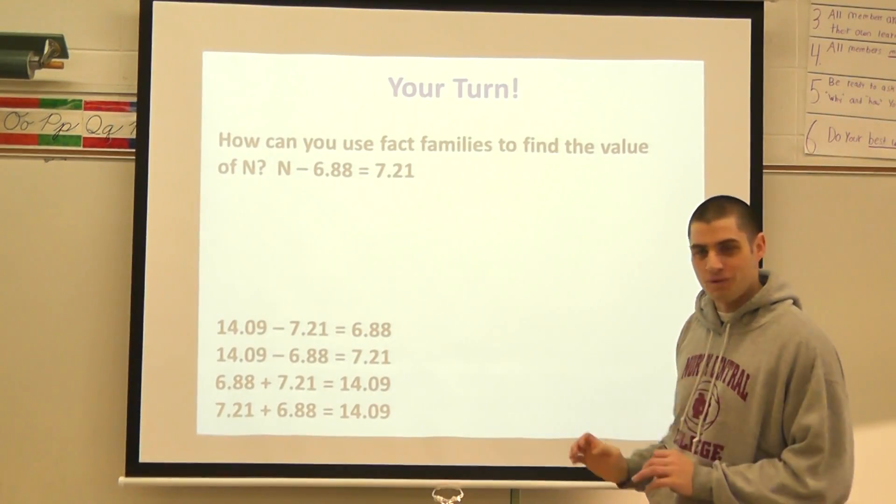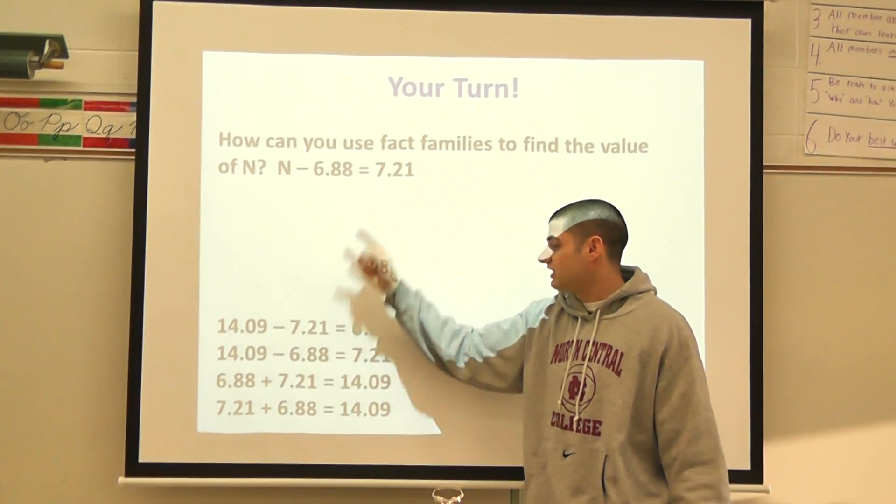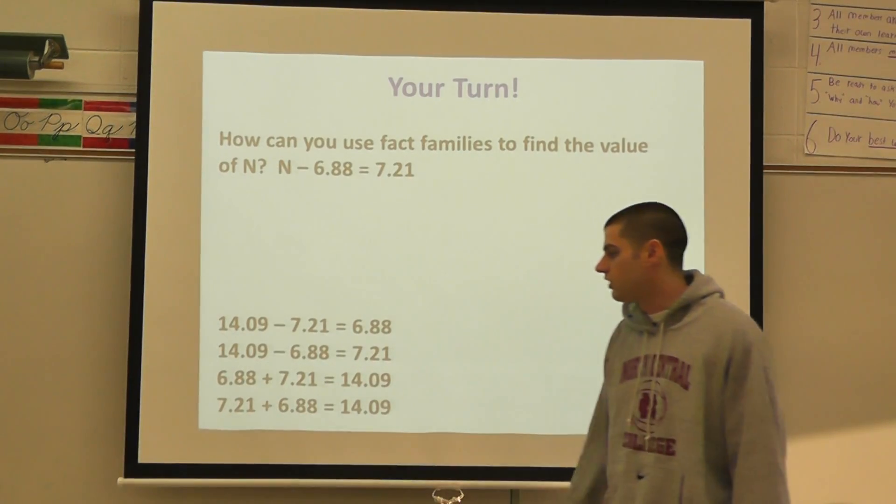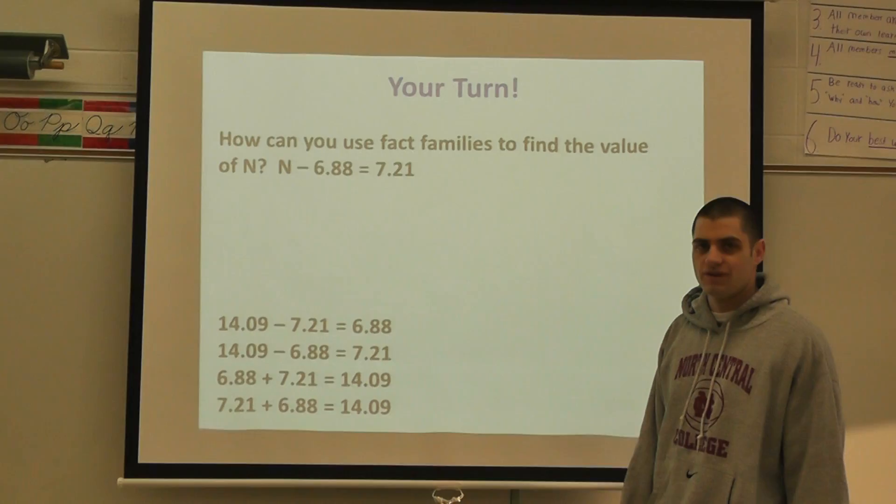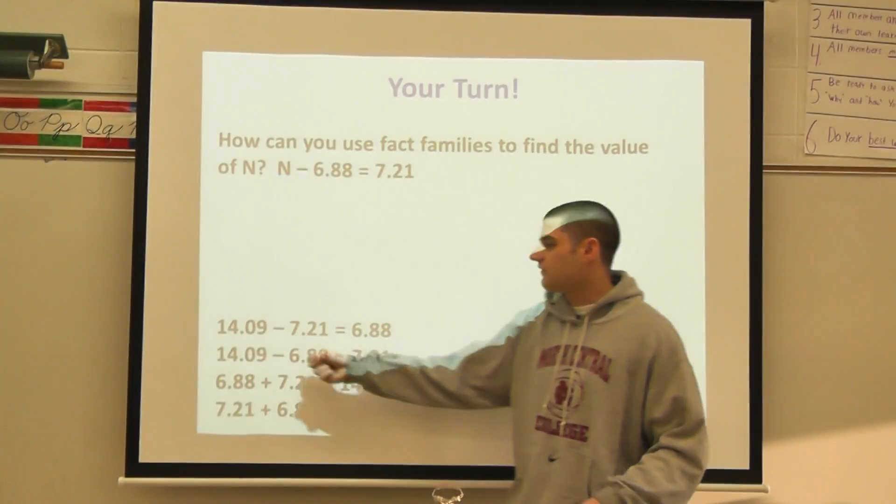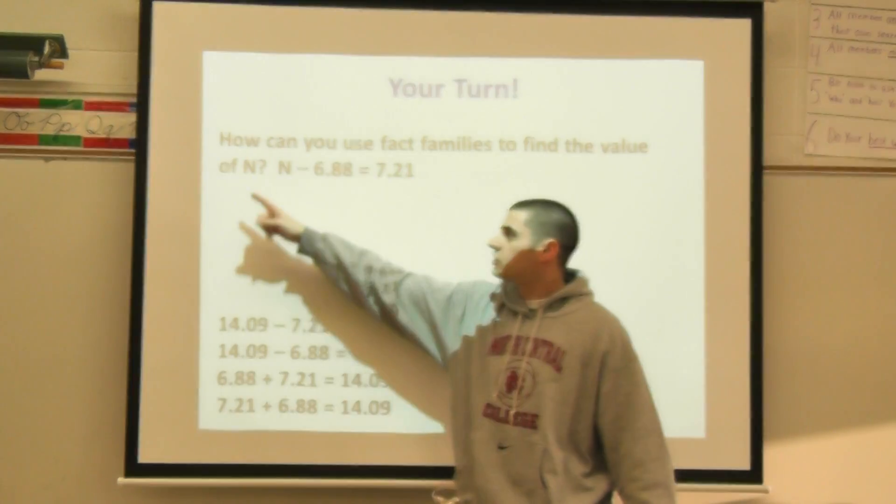However, going back to our problem, I added these two together to equal my biggest number, and then I flipped them here: 7.21 plus 6.88, which equals 14.09. Now the nice way to check this is to use the entire fact family.